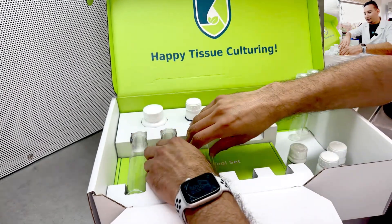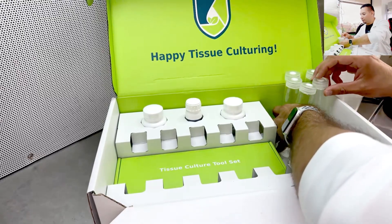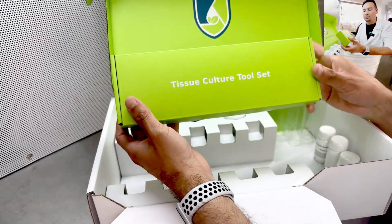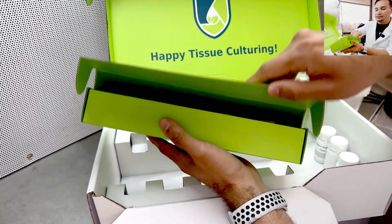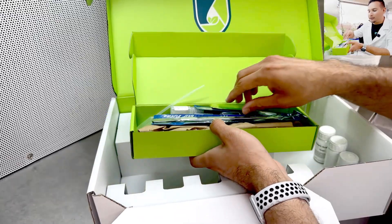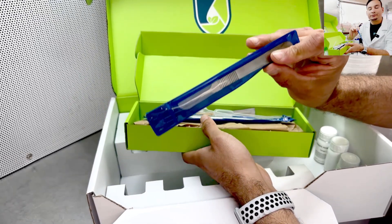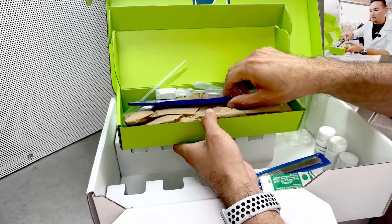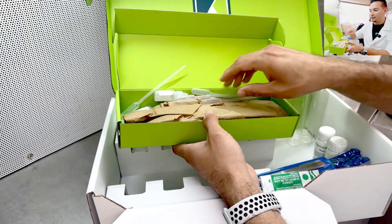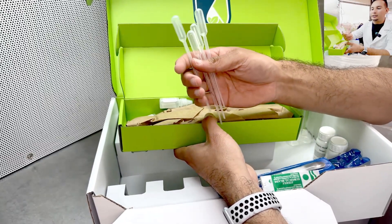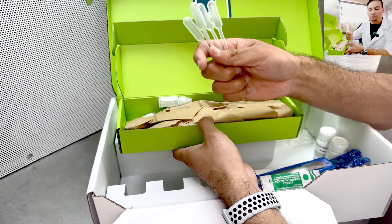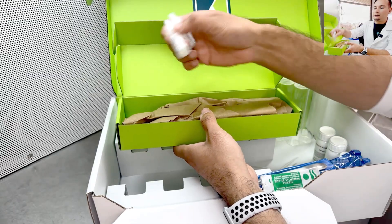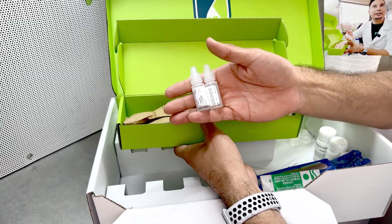This is something that puts the Plant Cell Technology kits ahead of the other kits - we also include the toolset. We have a scalpel, the scalpel blade, an 8-inch forcep, four micropipettes that you can use to add your chemicals like the PPM and plant regulators, and you also have your pH up and pH down.